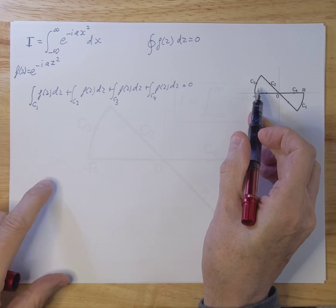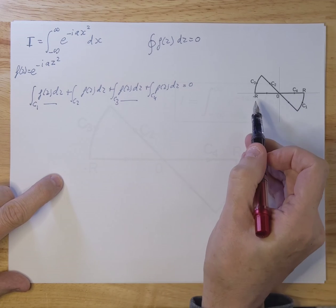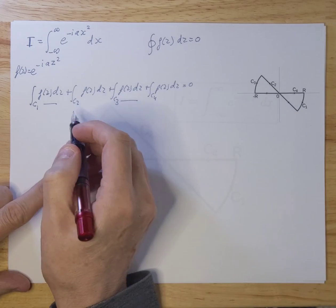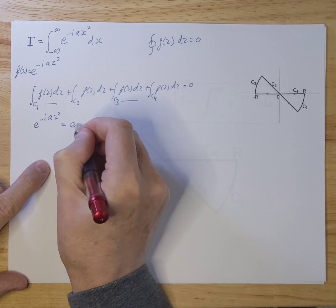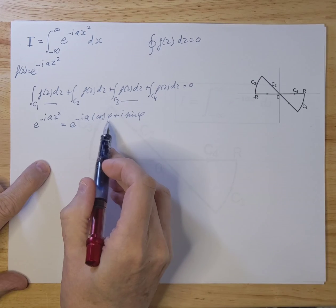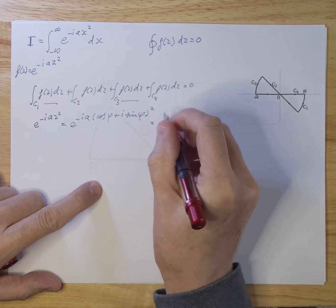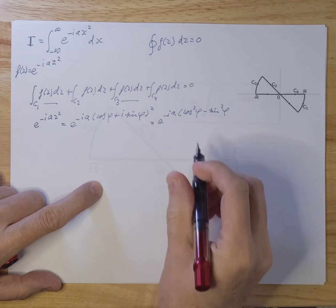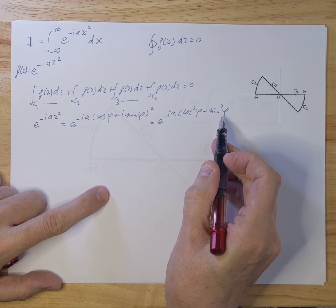Let's first focus on c1 and c3. We will find that if r goes to infinity — which we need because we need the integral from minus infinity to infinity — these pieces will go to zero. To see why, let's focus on the f(z) function and rewrite it using cosine and sine: c can be written as cosine φ plus i·sine φ, and we need to square that.